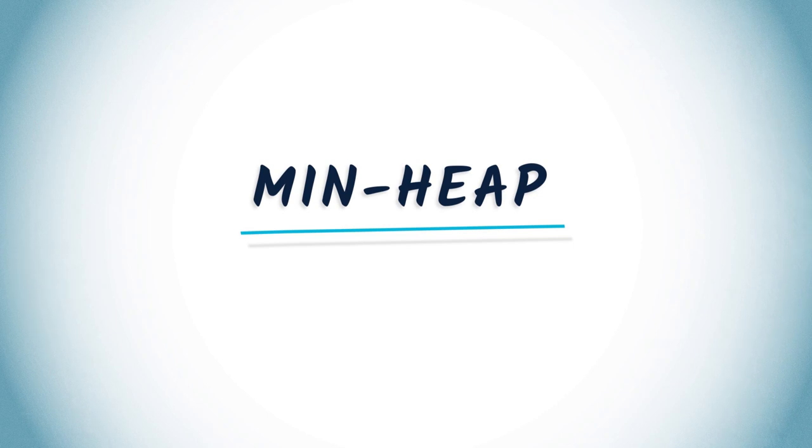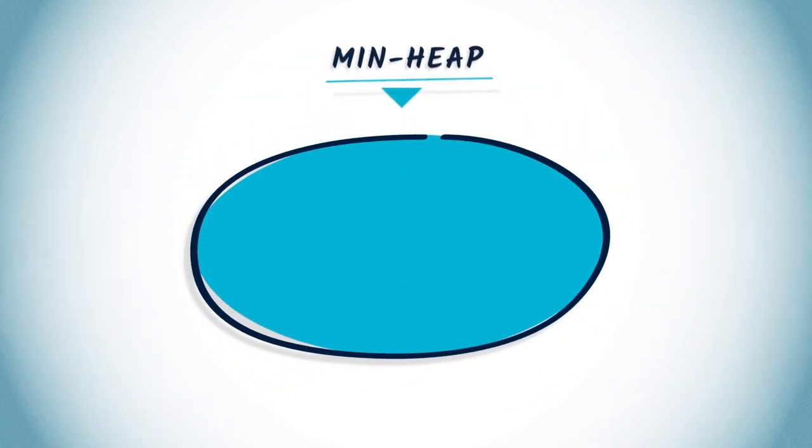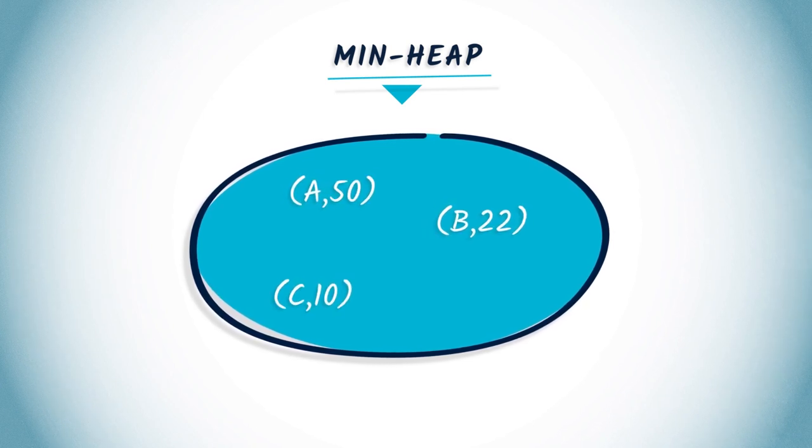Let's illustrate the use of a min heap with an example. We initialize an empty min heap. Let's add three key value couples: A 50, B 22, and C 10.